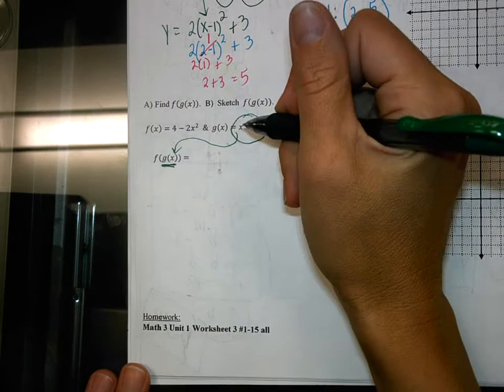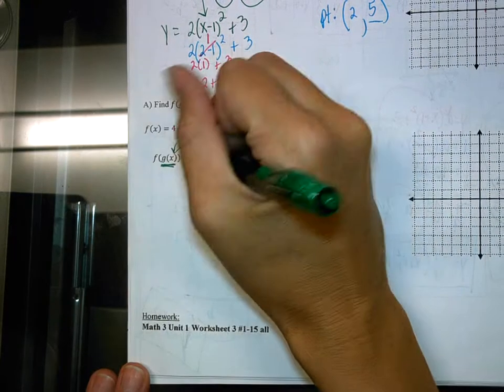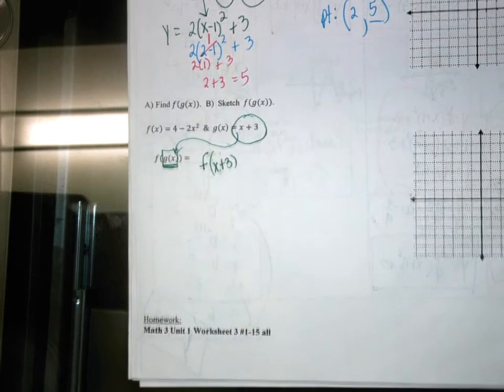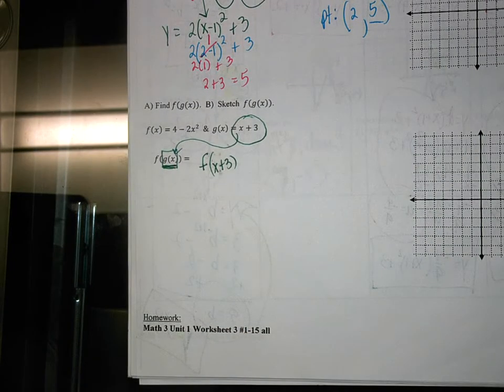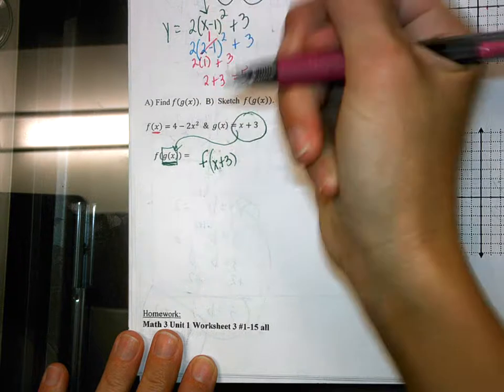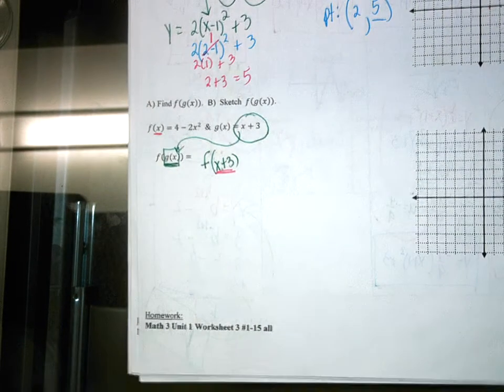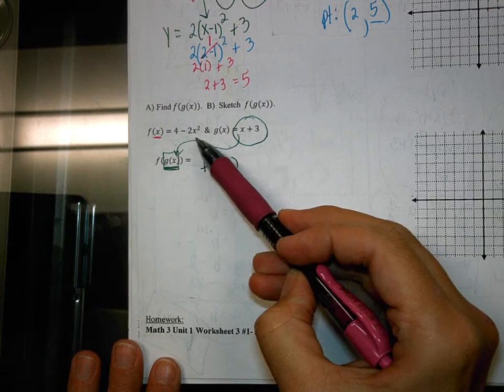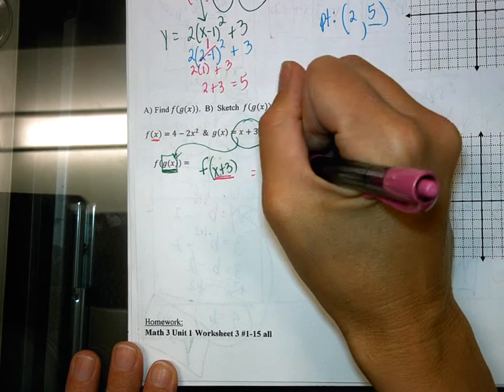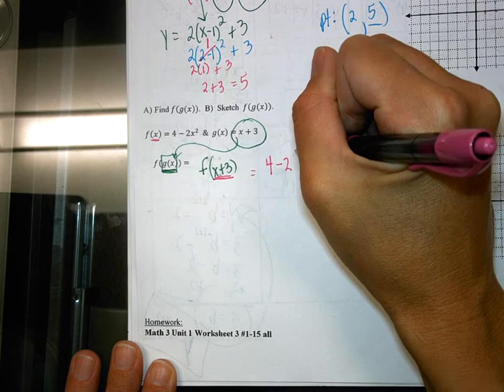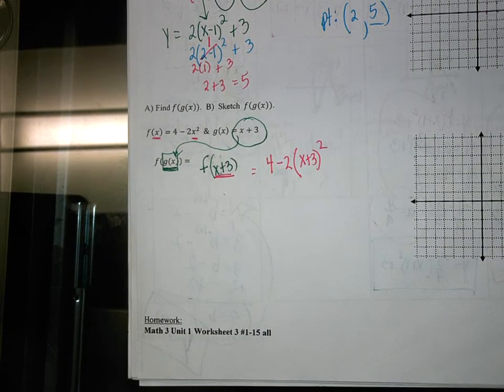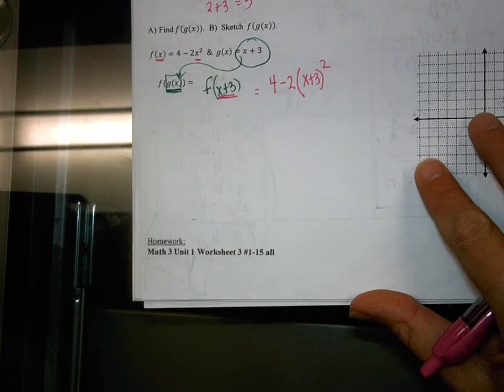So first we're going to go f and then write x plus 3. Because the only part that I'm substituting in right now is for that g of x. Are we good? So now, when you go to the f part, this f equation has just an x there, but I want to plug in x plus 3. So anywhere that I see an x in this equation, instead of writing x, I'm going to end up writing x plus 3. So we have 4 minus 2 and then it's going to be our parentheses x plus 3 squared because here was that x and instead of writing x, we write x plus 3.